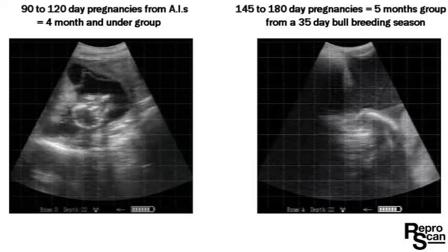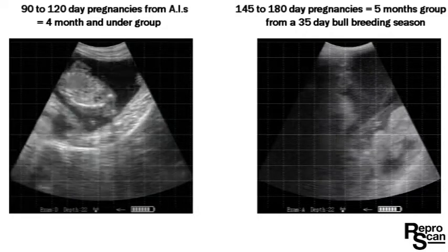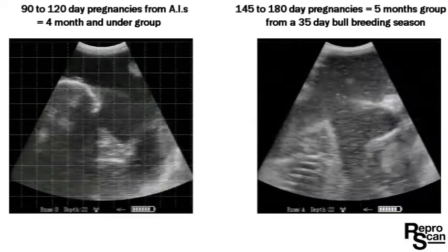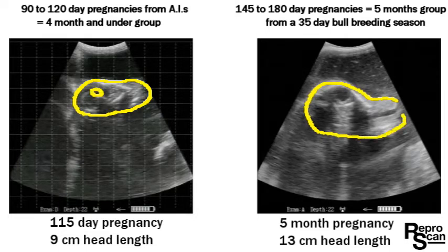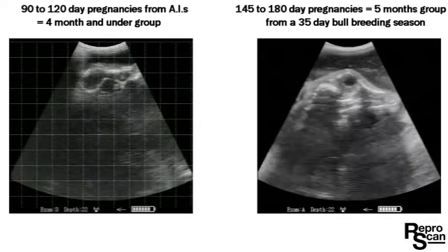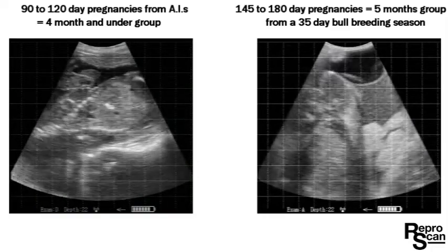We'll move along and freeze it again to give you another slower look. On the right we're outlining the head — you can see it's down at the bottom, not quite as clear. We've got head lengths to compare and you can see a significant difference there between the four and five monthers.